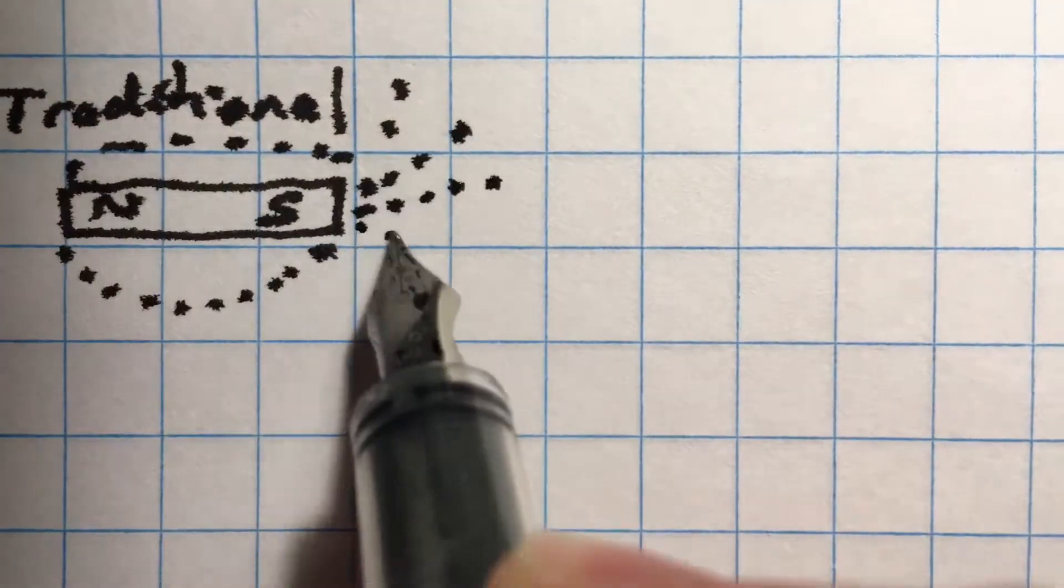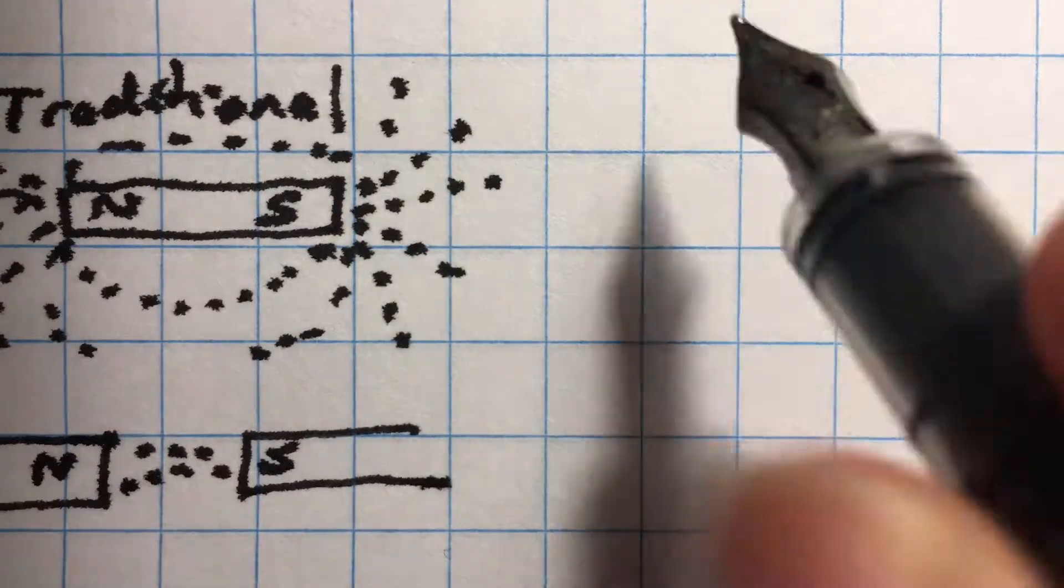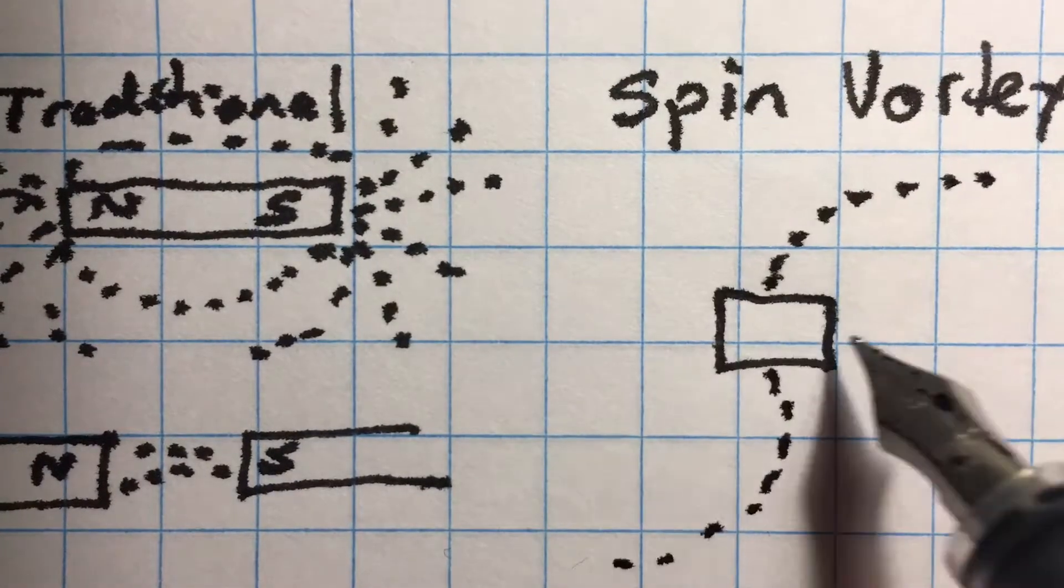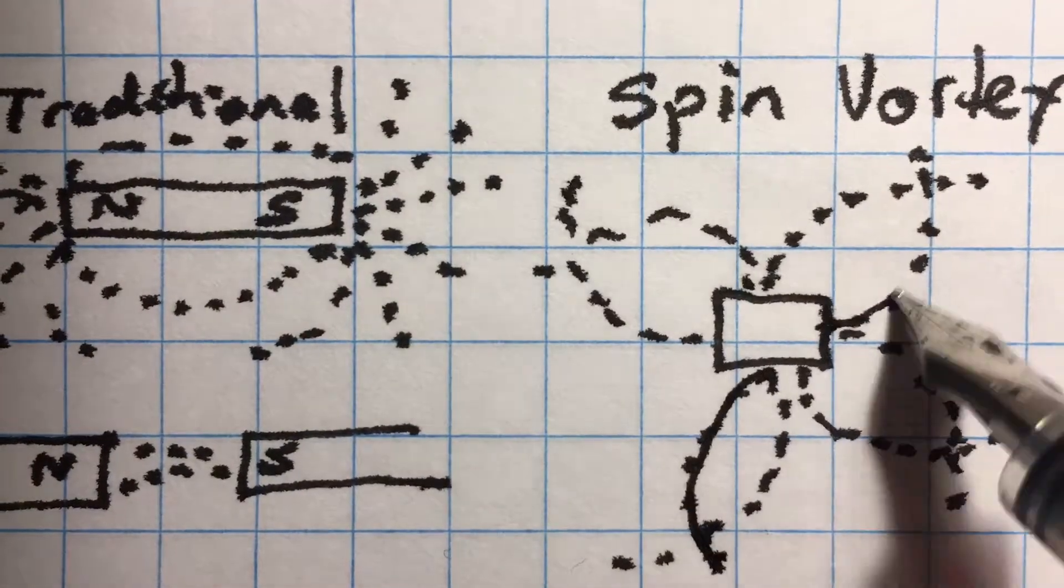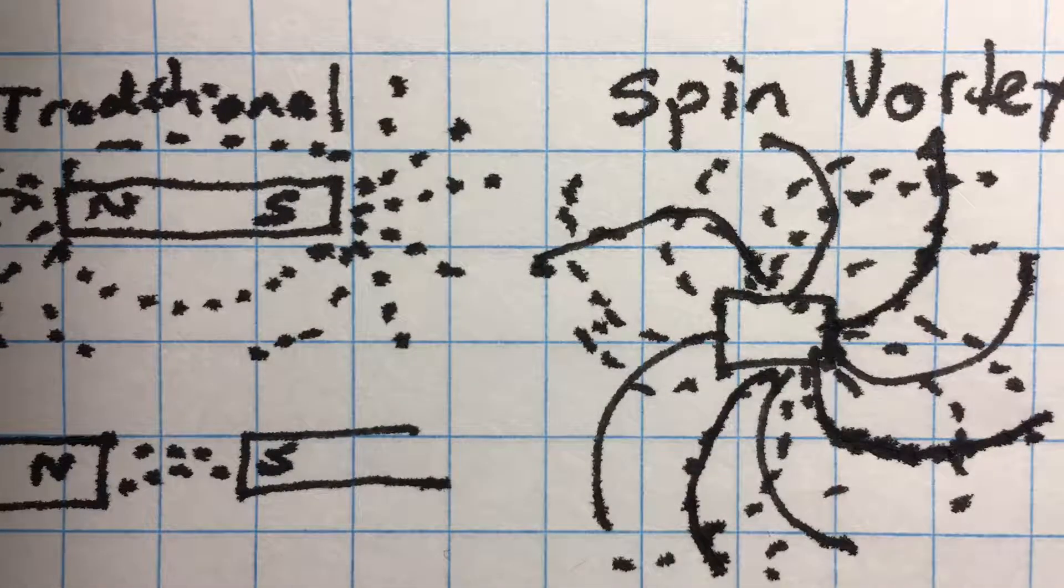In the traditional explanation of a bar magnet, the field lines describe but do not explain why the magnets are drawn to each other. However, an end-view examination of a bar magnet reveals the magnetic spatial-counterspatial vortex.